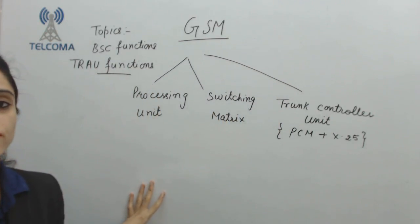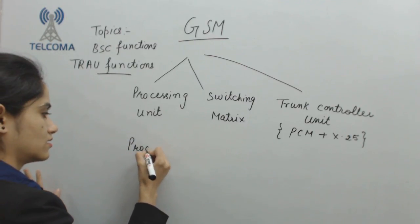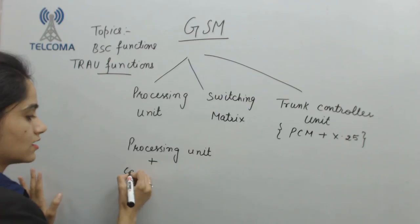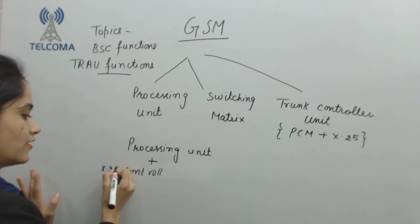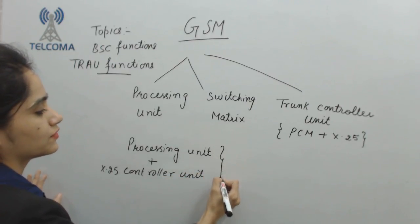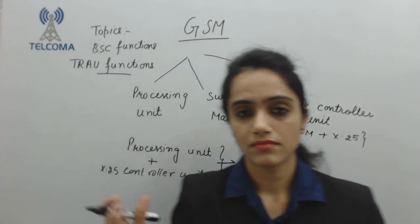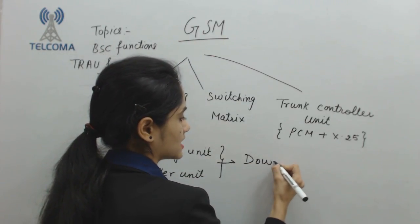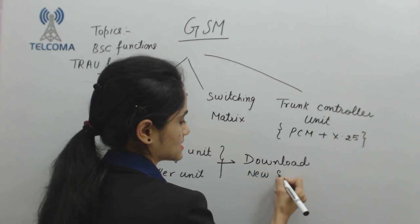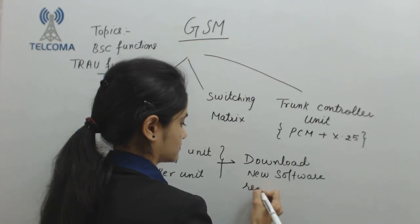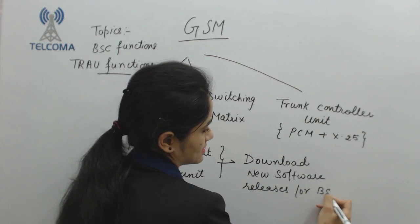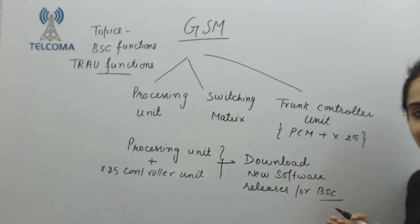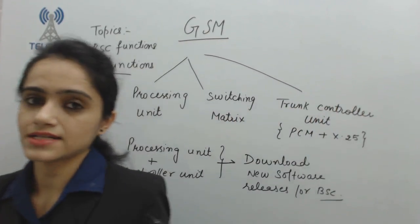With the help of the processing unit and the X.25 controller unit, both of these units in the BSC download new software releases for BSC. As BSCs are upgraded, they change software configurations. These two units automatically download new software so that the BSC can upgrade.